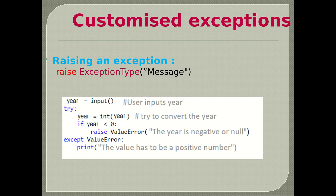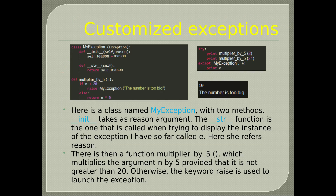Customize exceptions — raising an exception: raise ExceptionType('message'). We set year as input from the user. We try to convert the year to an integer; if it is less than zero we give an error message. If conversion fails, we set another message. Here is a class named myException with two methods: __init__ takes reason as an argument, and __str__ is called when trying to display the instance. There is then a function multiplier_by_5 which multiplies n by 5, provided it is not greater than 20; otherwise the raise keyword launches the exception.